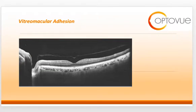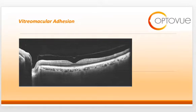This is really the second stage of a vitreomacular adhesion, or the second stage of PVD development. You can see here that the vitreous has detached from the macula; however, it is still attached at the optic nerve head. When you see the PVD floating but not yet fully suspended in the vitreous body, and still attached at the optic nerve head, this would be a stage two PVD, or stage two vitreomacular adhesion.